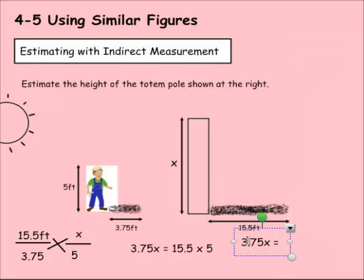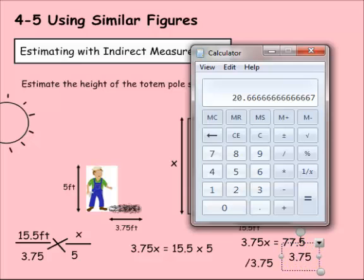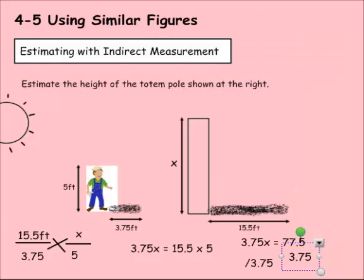So 3.75X equals 77.5. Divide both sides by 3.75. That'll give me 20.666. So that'd be 20 and two-thirds.